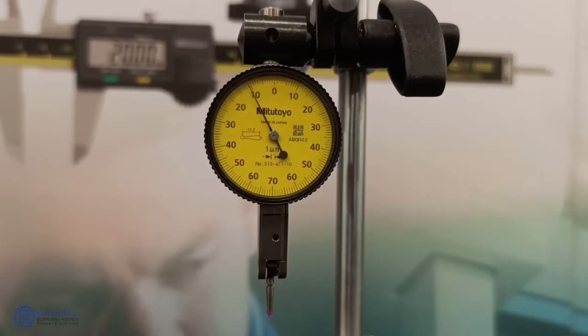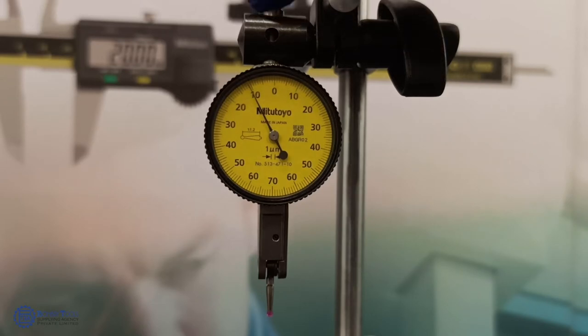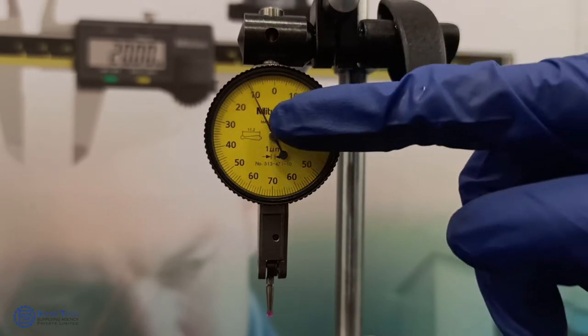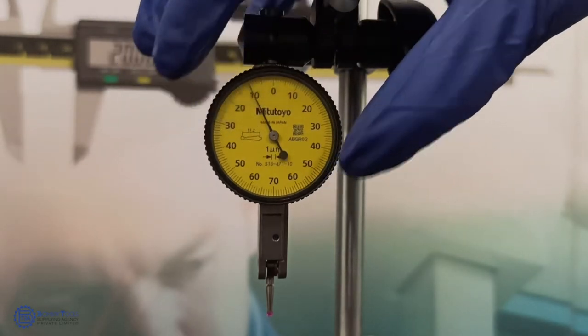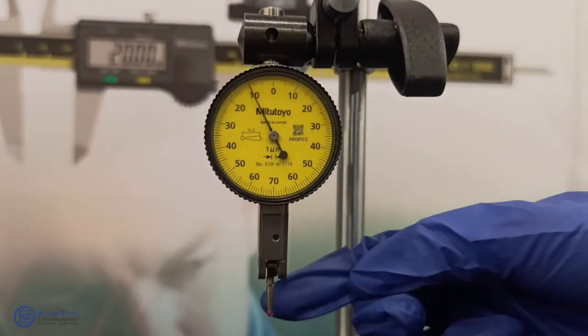Let me explain the parts of the lever dial gauge. This is the stem, the dial face, bezel, pointer, and the stylus.